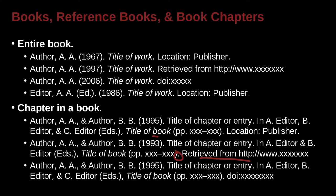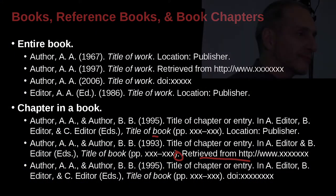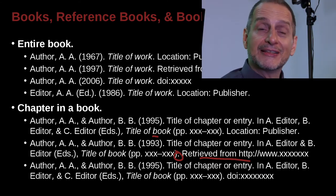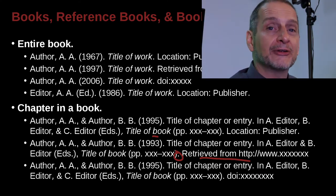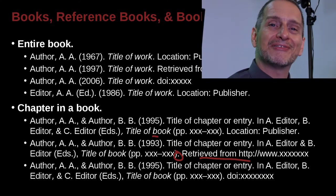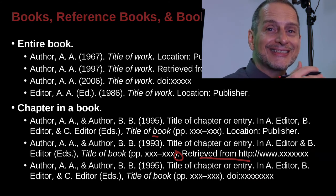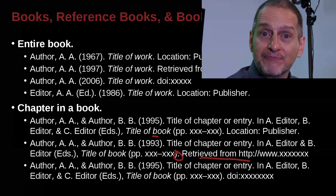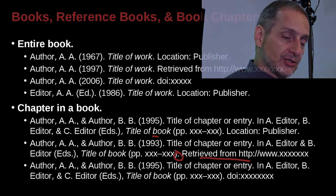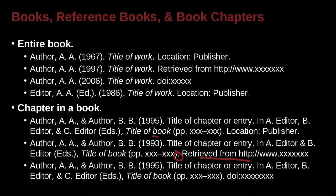One more thing we could do is DOI — the same thing all over again, only now we're going to have the document object identifier at the end, rather than the URL or the city and the publisher's name. So we're making some progress, I think.